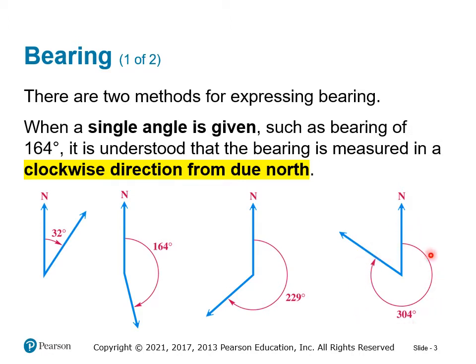I mentioned those specific x and y-axis points — those quadrantals — because when we're doing true north we really do have a Cartesian-type system, and we can build triangles off the x-axis in connection to that. You'll see that in just a second as we work our first problem.